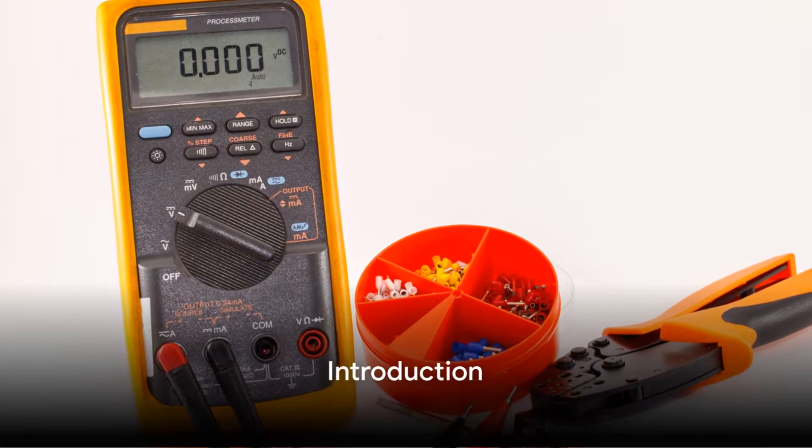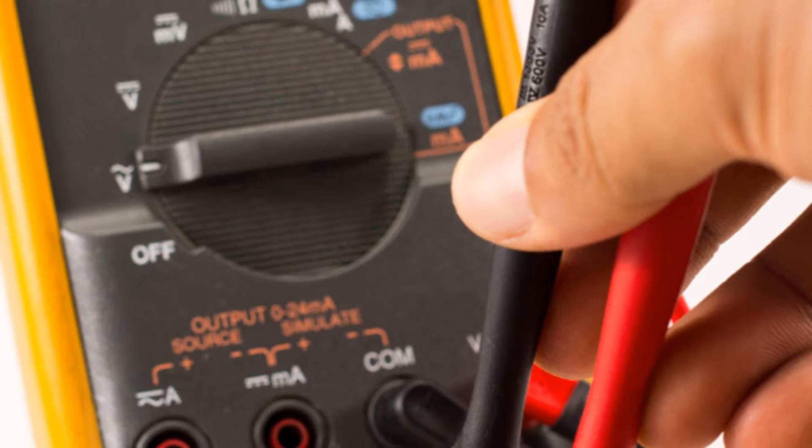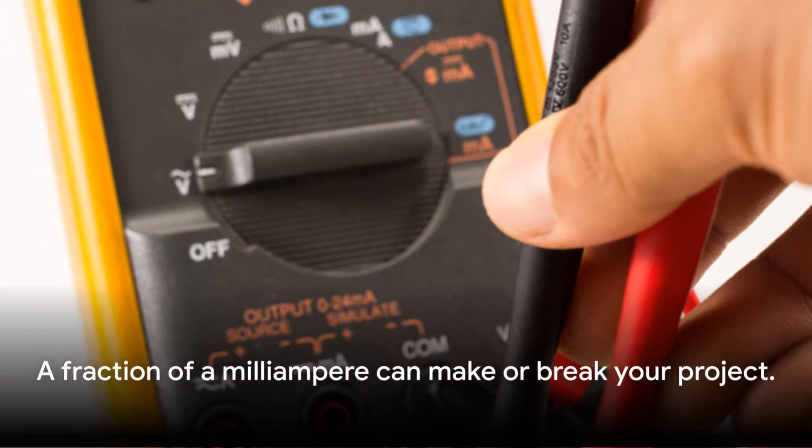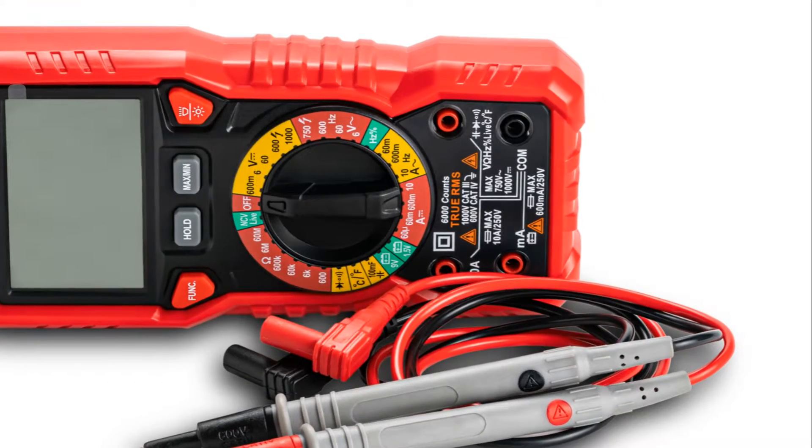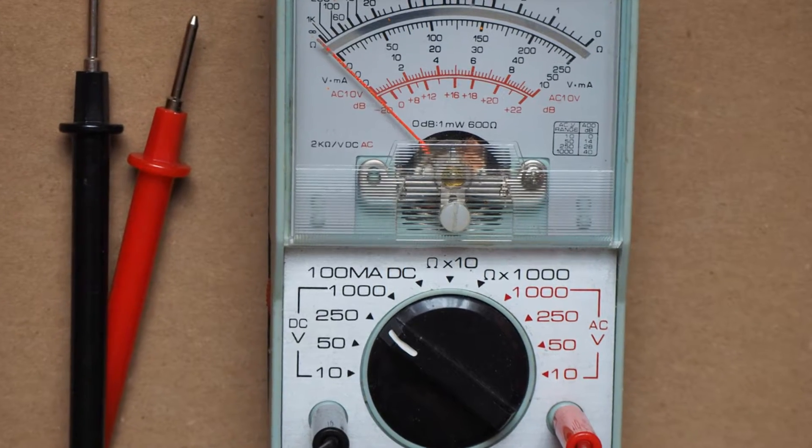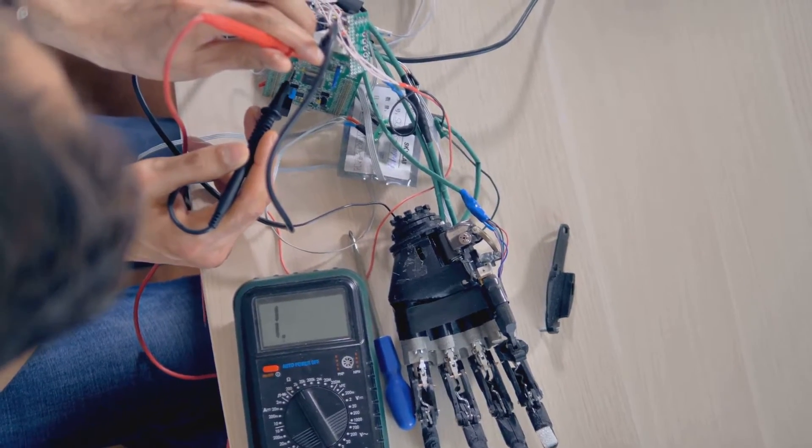Welcome everyone! In the world of electrical engineering and DIY projects, precision is everything. A fraction of a milliampere can be the difference between a successful project and a potential disaster. That's why today, we're diving deep into the method of measuring 4 to 20 milliampere using a multimeter.